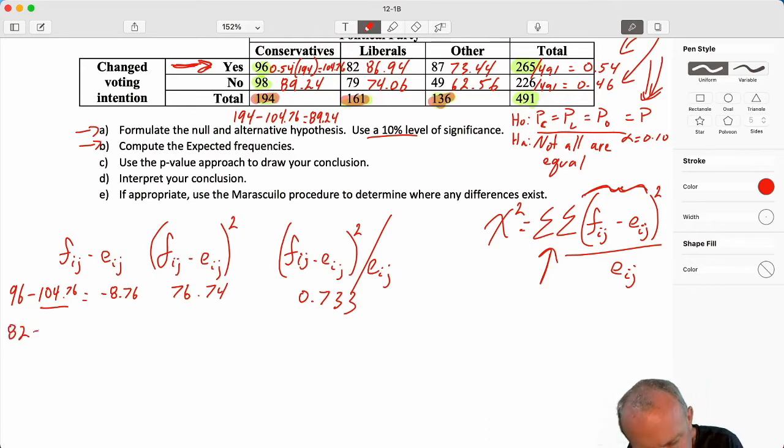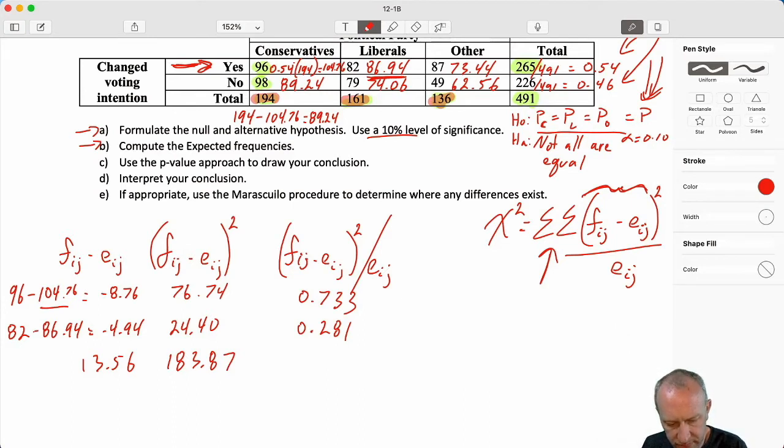Here I have 82 minus 86.94, minus 4.94 squared, and divided by 86.94. And on we go. Now I'm into other. 87 minus 73.44, that gives me 2.5.